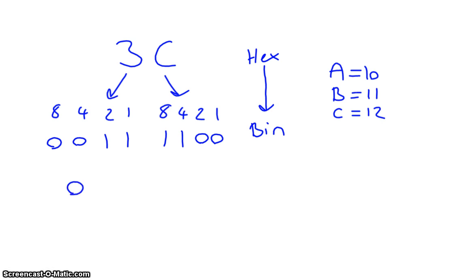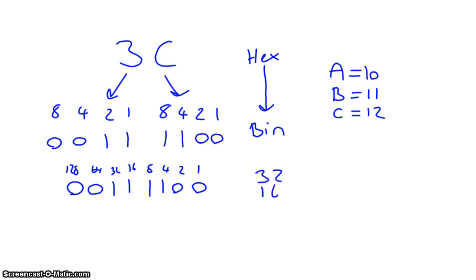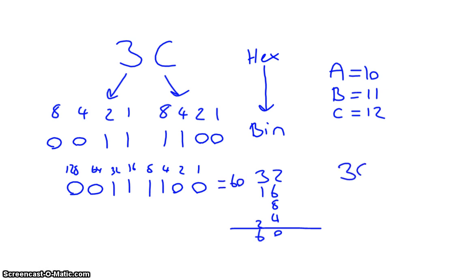The next step is to convert binary into denary, just as we've done before. The column values are 1, 2, 4, 8, 16, 32, 64, 128. So we've got 32 plus 16 plus 8 plus 4. Add them together and we get 60. Which means 3C in decimal is 60.